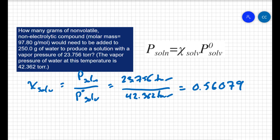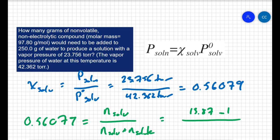The mole fraction of the solvent, 0.56079, is going to equal the moles of my solvent divided by the moles of my solvent plus the moles of my solute. Well I know how many moles of solvent I have, I know I have 250 grams of water. So 250 divided by the molar mass of water gives me 13.87 moles of water. So this is going to equal 13.87 moles divided by 13.87 moles plus the moles of my solute.